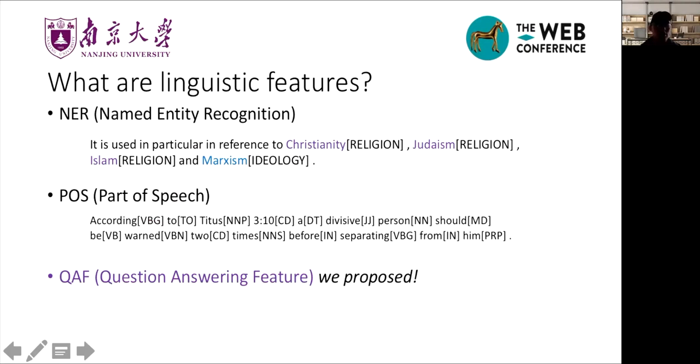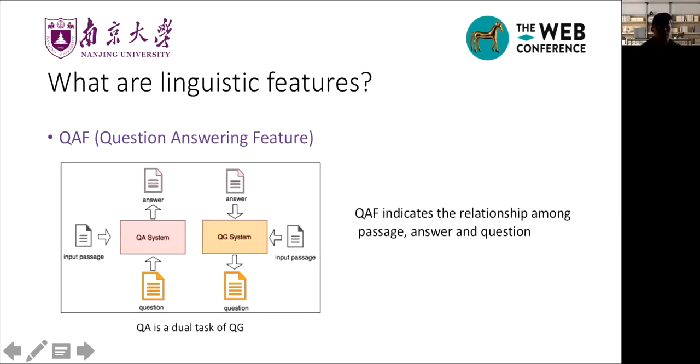So what are linguistic features? In this paper, we mainly focus on three linguistic features: named entity recognition, part of speech, and question answering features. Named entity recognition denotes the named entities in the sentences. The commonly used NER labels include number, location, religion, person, and so on. And POS indicates the property of certain words. For example, RB denotes the adverb. QAF is the linguistic feature we proposed in order to help QG model understand the passage from a different way. Let's introduce the QAF.